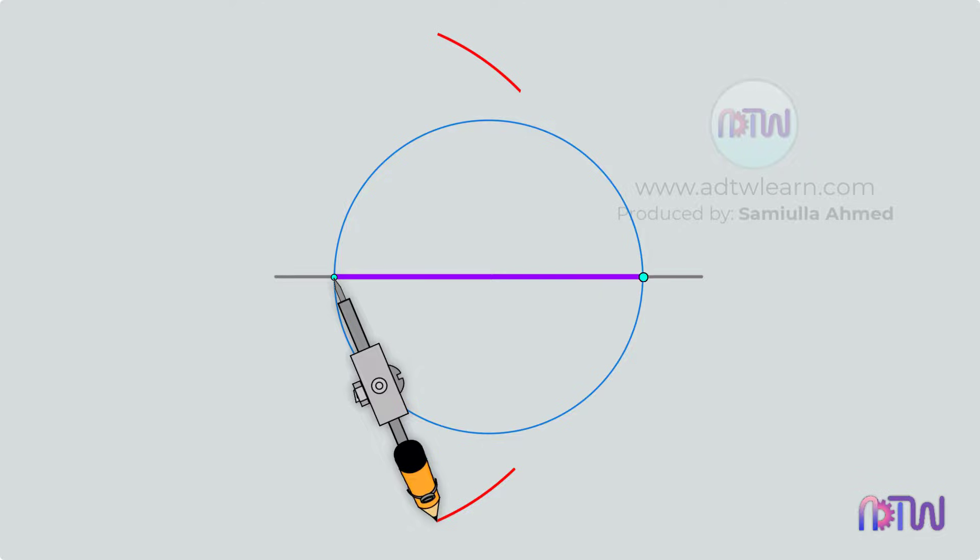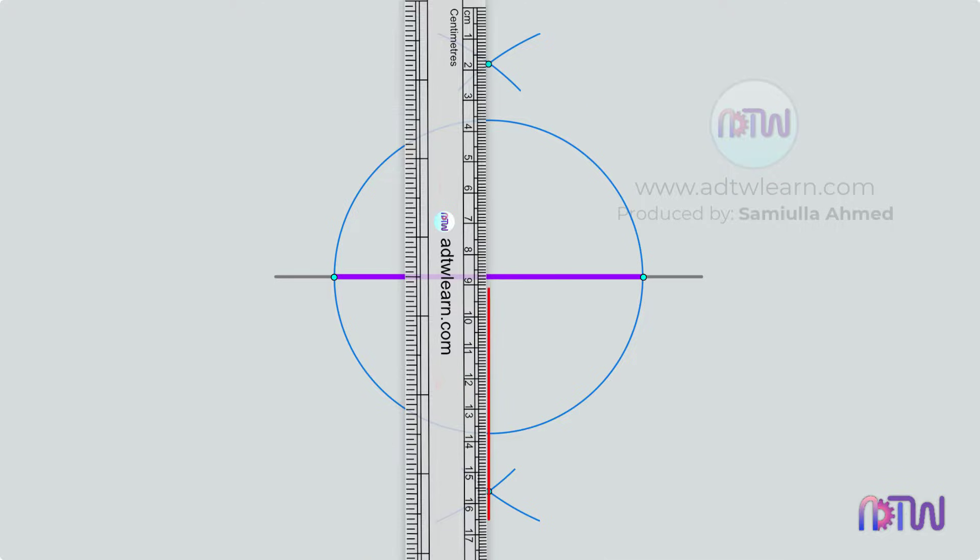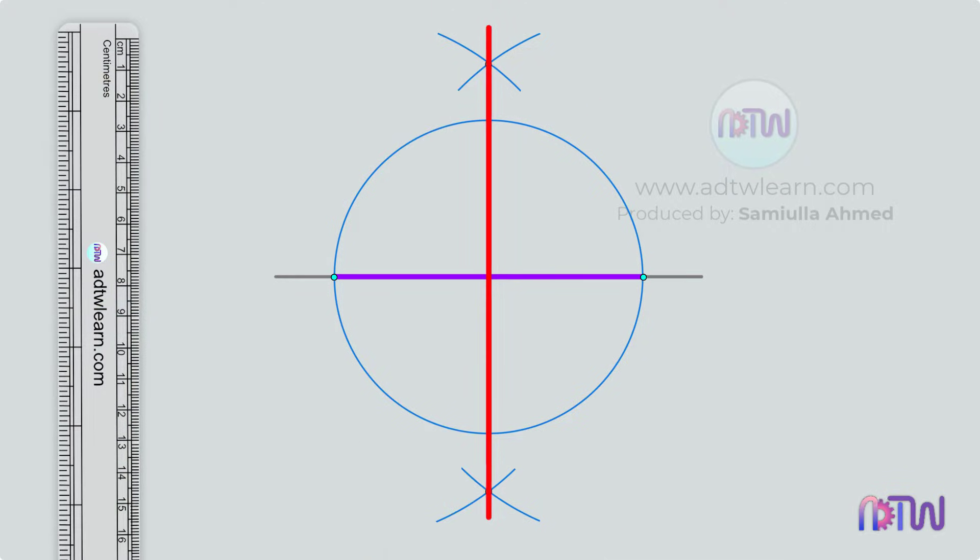Next, keep at this point and draw arcs above and below. After this, draw a line passing through these points. This line will be exactly in the middle of this horizontal line.